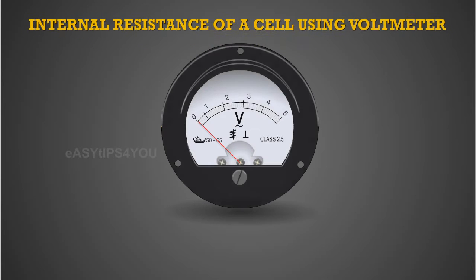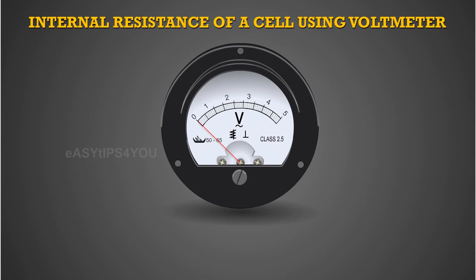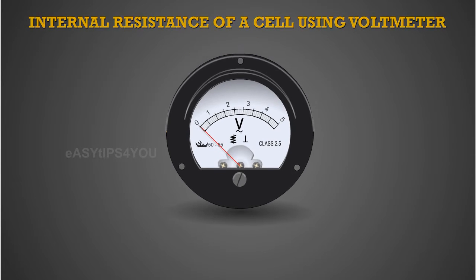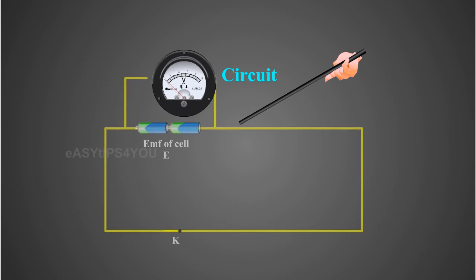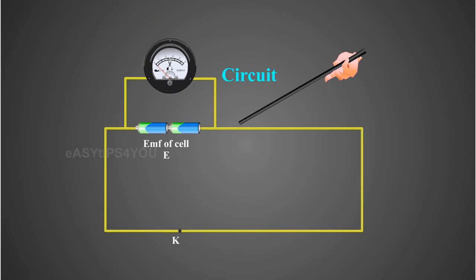Let us find the internal resistance of a cell using a voltmeter. Observe the circuit connected carefully as indicated. The circuit connections are made as shown in the figure.